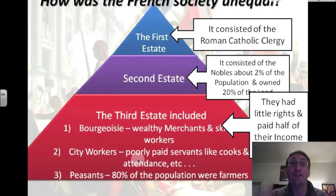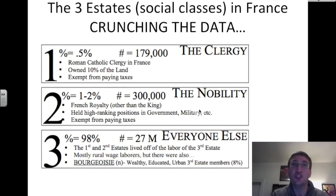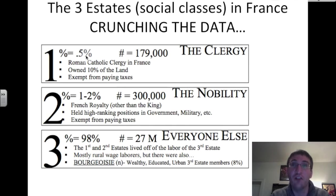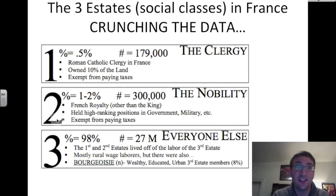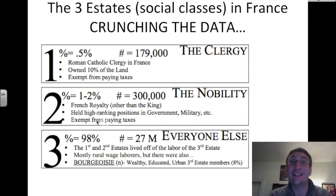Let's talk about French society in the late 1700s — it was unequal because there were three different social classes called estates. The first estate was the clergy, making up 0.5% of France. These were the Roman Catholic leaders. They owned 10% of the land and were exempt — they did not have to pay any taxes. The second estate was the nobility, French royalty other than the king. They held the high-ranking positions in government and the French military, and were also exempt from paying taxes.